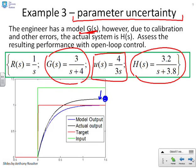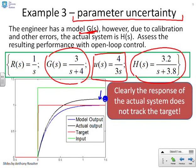Clearly the response of the actual system does not track the target. The open-loop control is not effective. The differences in the parameters here are quite small: 3 has gone to 3.2, 4 has gone to 3.8. They're not big errors compared to a real system, and yet the difference in the steady-state output is quite significant.